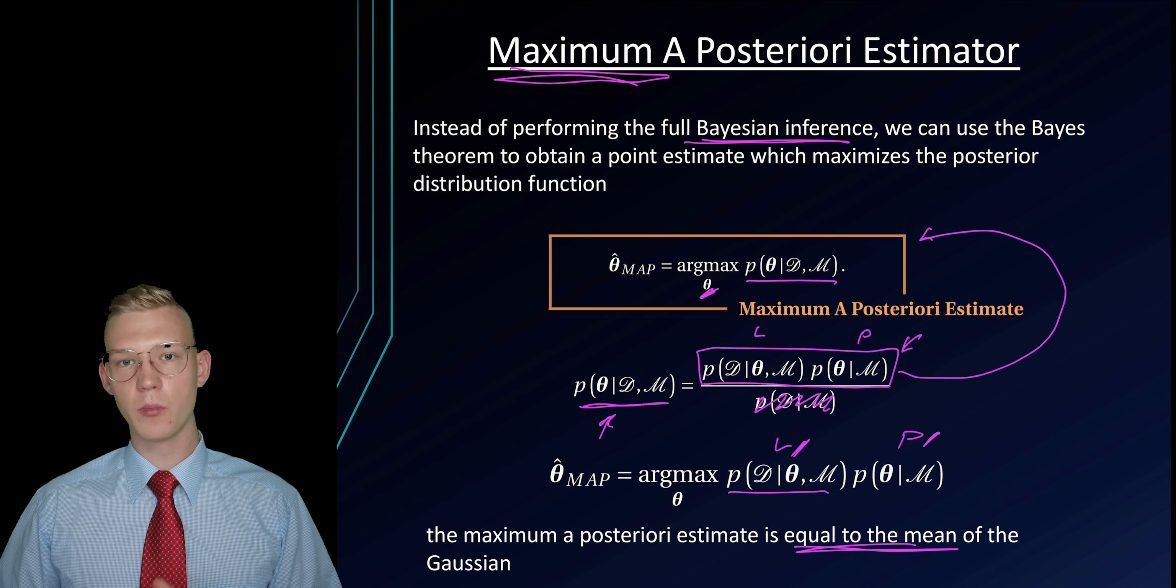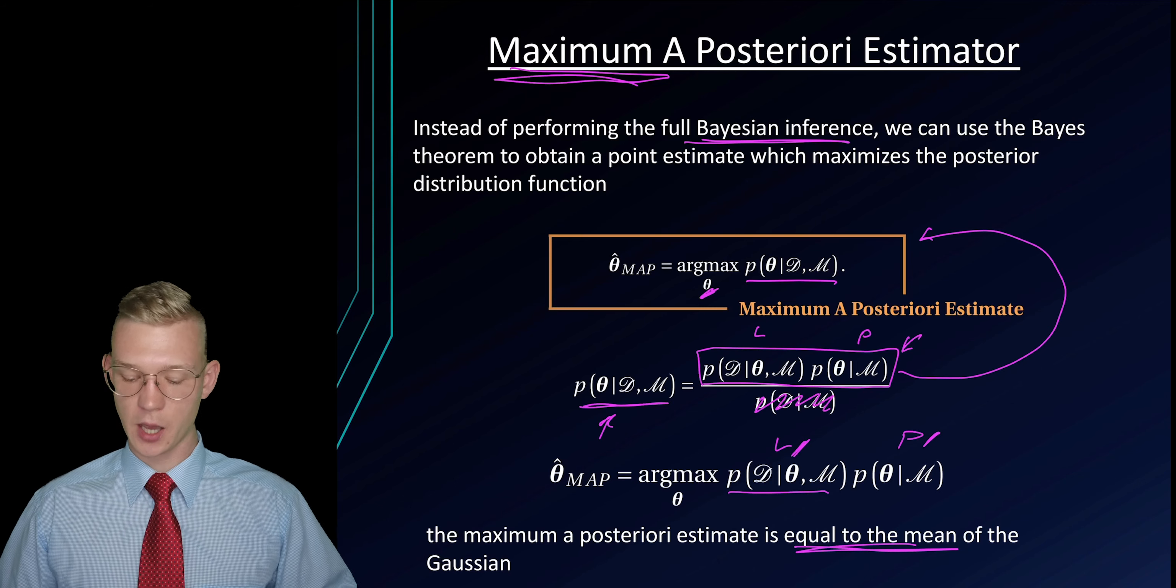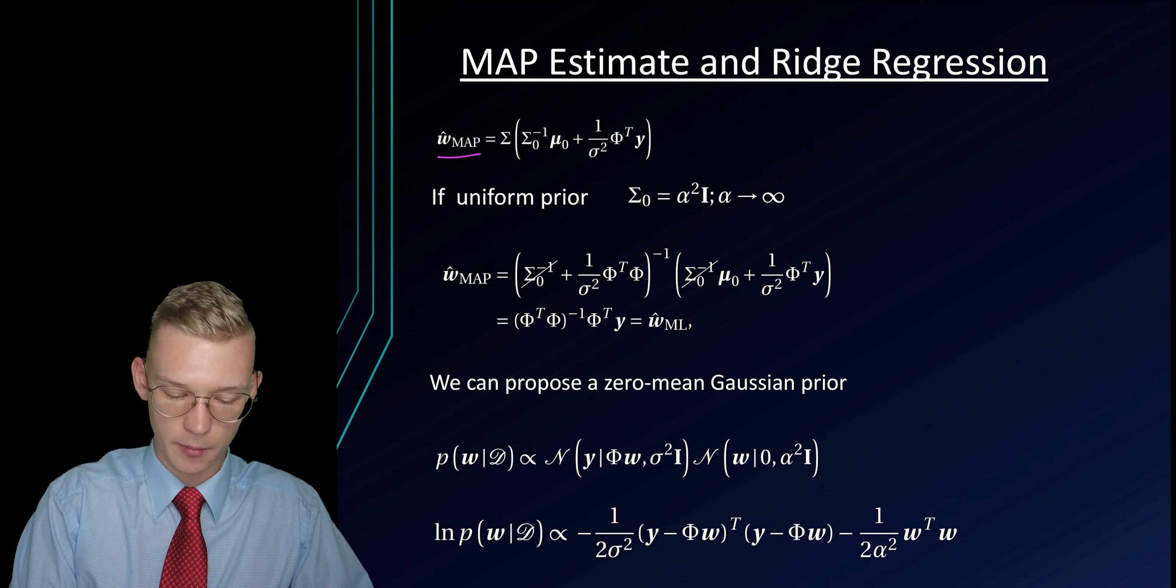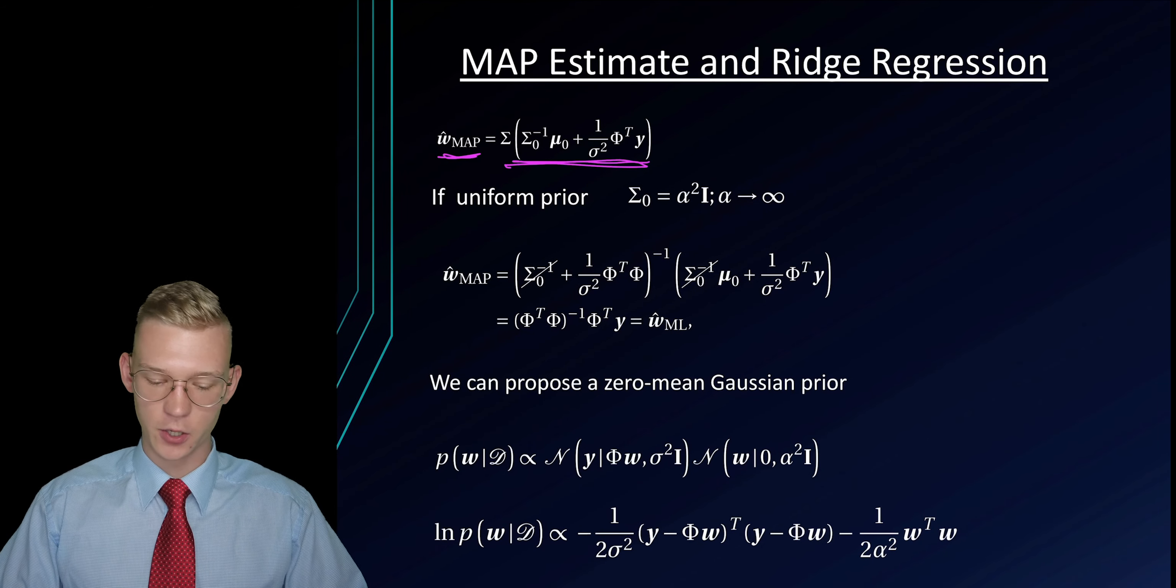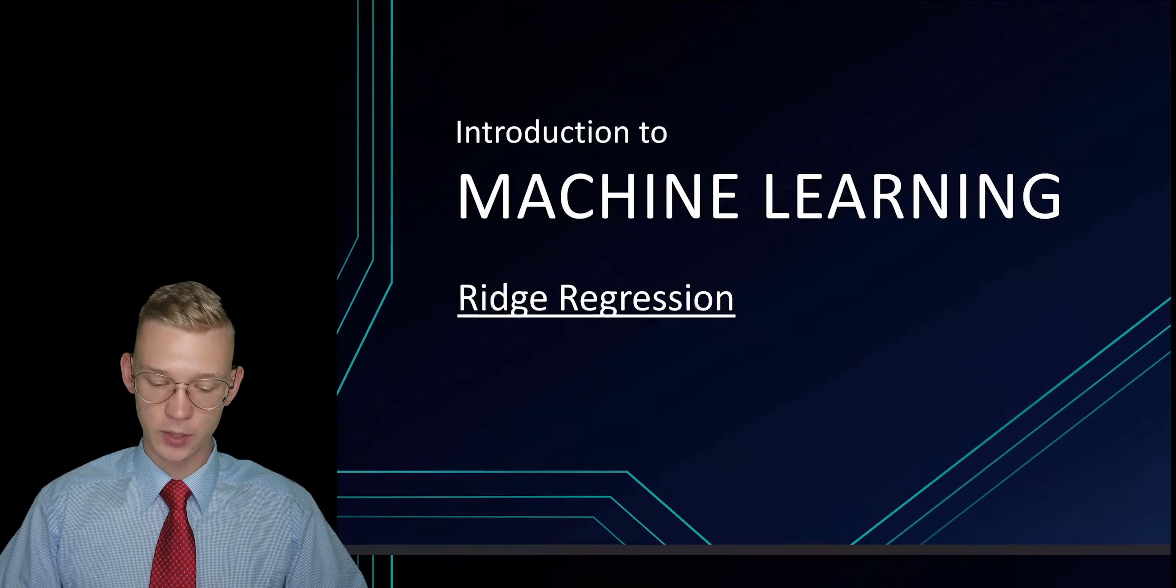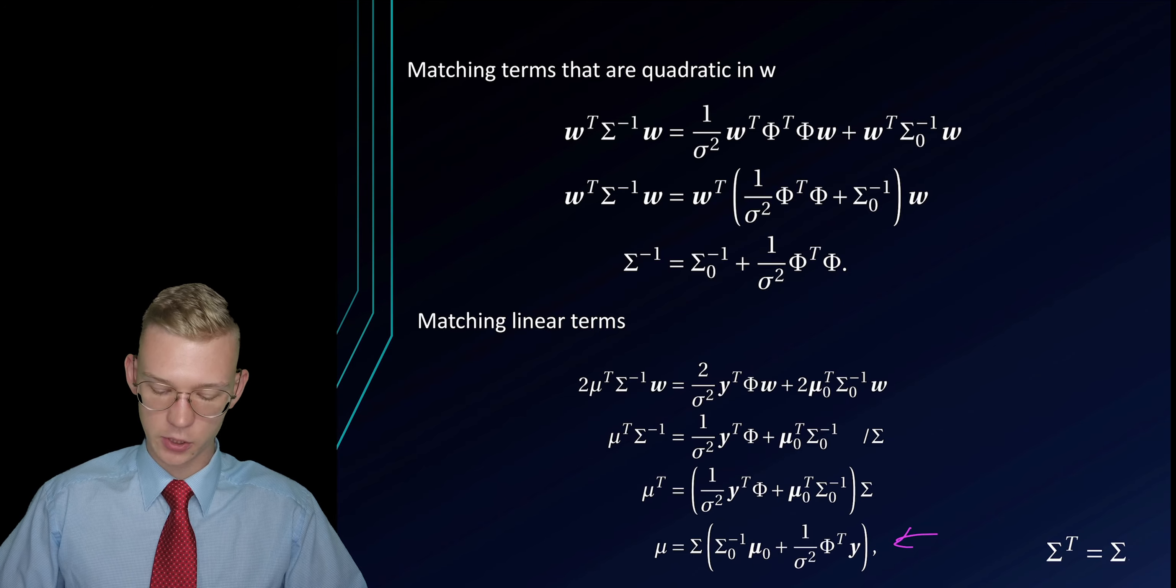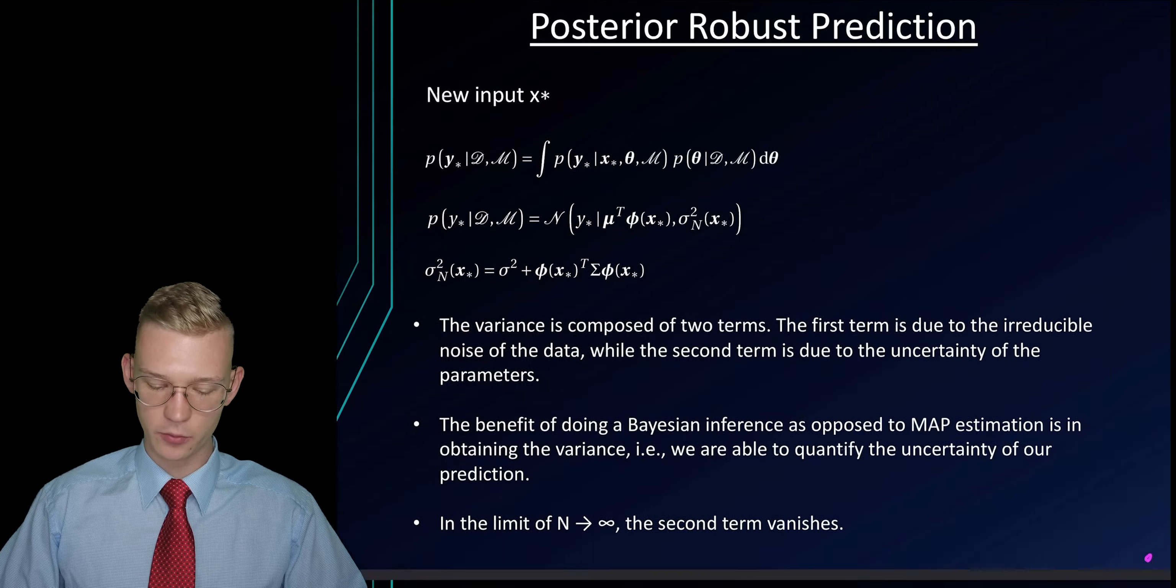The maximum of our distribution in the Gaussian is the mean. So our maximum a posteriori is just the mean function or the mean that we derived in, here it is, in the last video. If you're interested how we got it, this is the one right here.